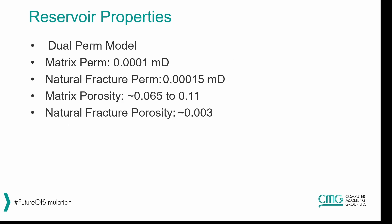Continuing with the reservoir properties, it is a dual permeability model so we have natural fractures present. The matrix permeability is 1e-4 millidarcies and the natural fracture permeability is slightly higher at 1.5e-4 millidarcies. We also have the matrix porosity, and the natural fracture porosity is of course very small as most of the fluid is held in the matrix.